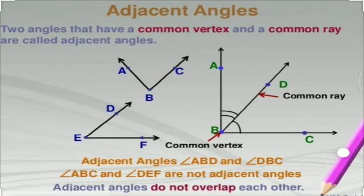For adjacent angles, keep three things in mind: the pairs of angles should have a common vertex, a common ray, and different interiors. If all three things are present, then it is an adjacent angle.